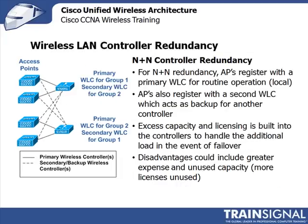N+N is a little bit different. The APs register locally with the primary controller, and then there's another controller at perhaps a different location handling a different group of access points — that's the secondary. There are two groups: the top access points register with one primary controller, and the secondary controller handles the other group. Essentially, these access points are backing each other up. To do this correctly, you must ensure enough licensing and capacity in each one to handle all network traffic if one goes down. It's a more bulletproof approach but can be more expensive due to unused capacity.